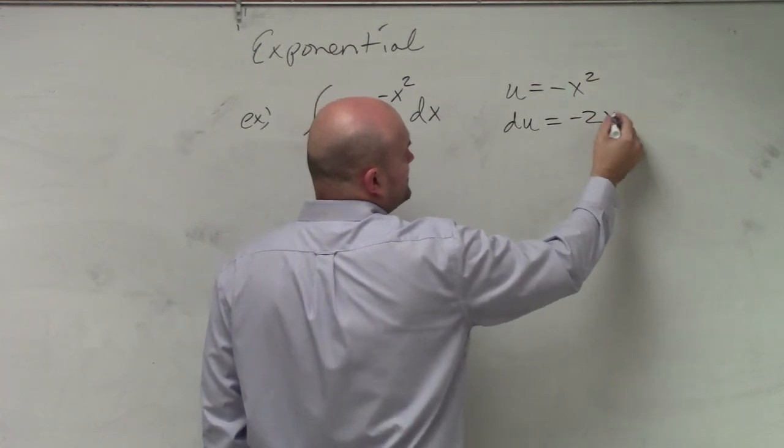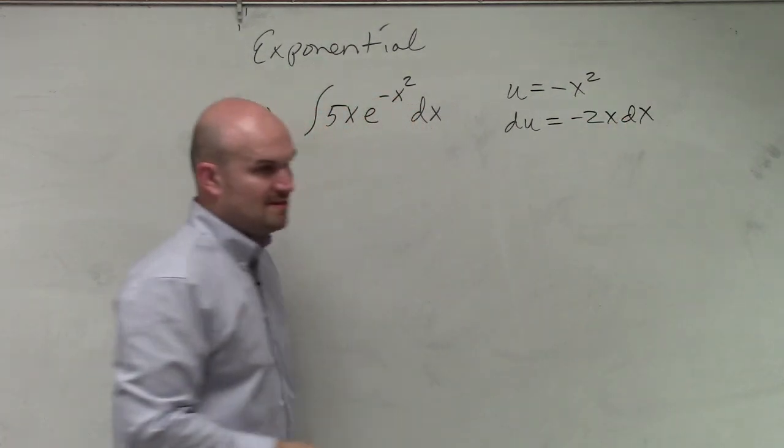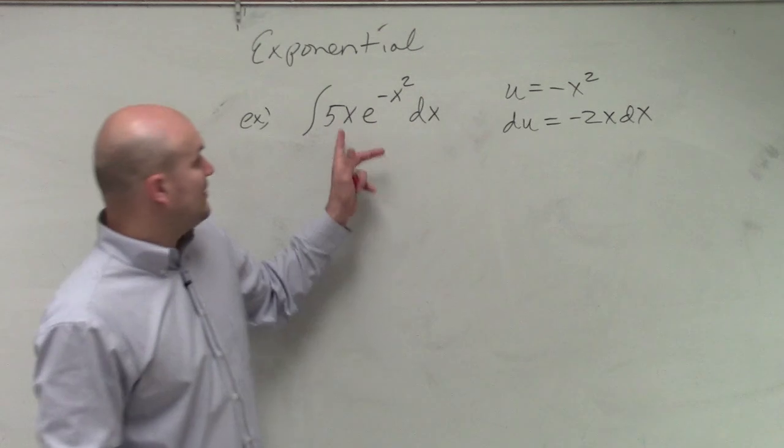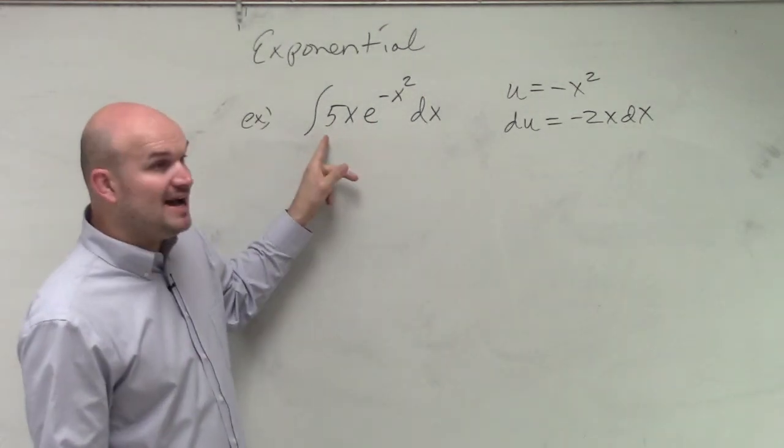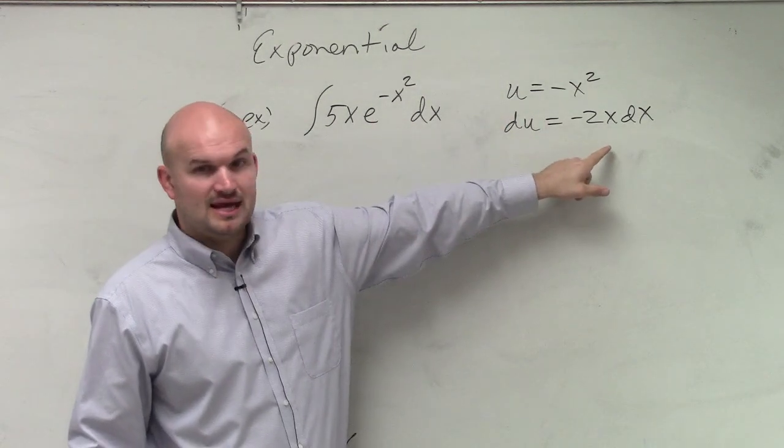Take the derivative, we're going to get a negative 2x dx. But there's a problem here. We have our extra x, which that's good. But we have a 5 here, and this is a negative 2.